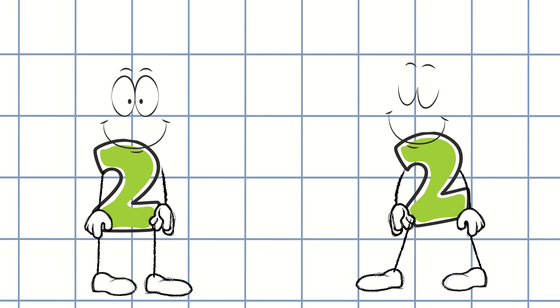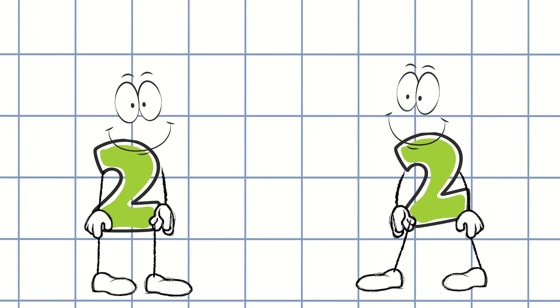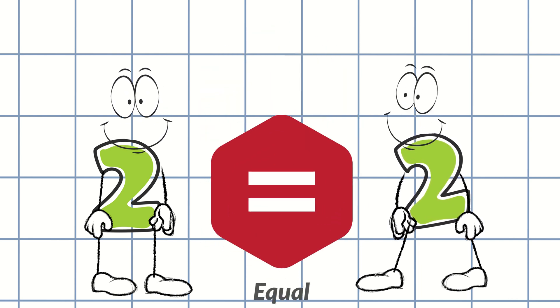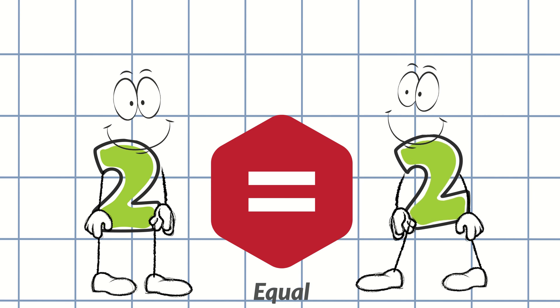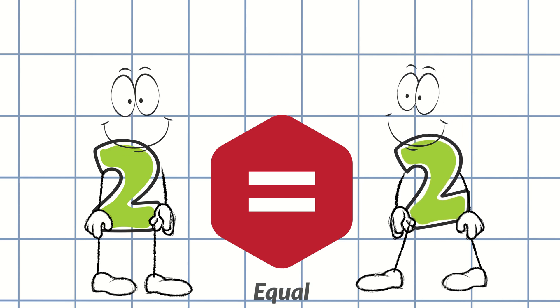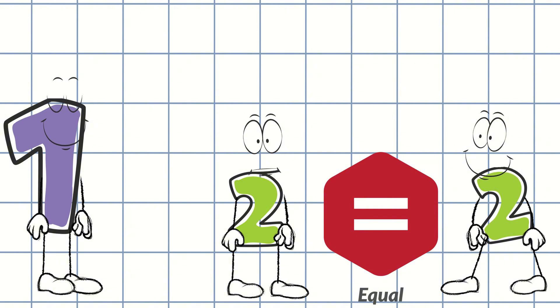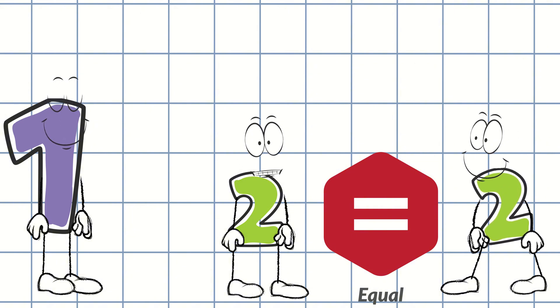When two numbers are exactly the same, we say they are equal. Neither is greater and neither is less. They're just equal. Yep. We're both number twos, so we're equal. Neither of us is greater or less.